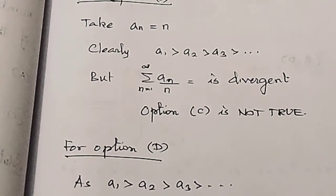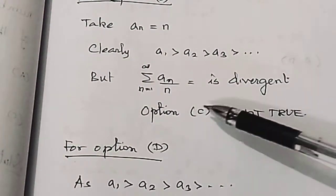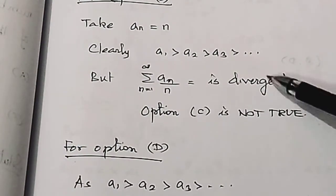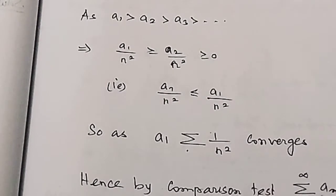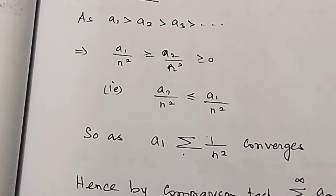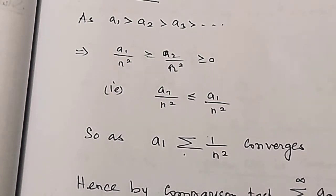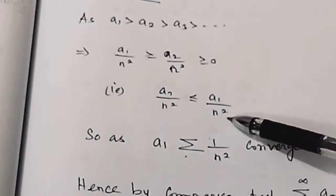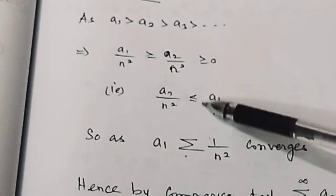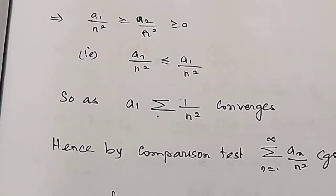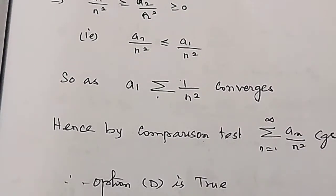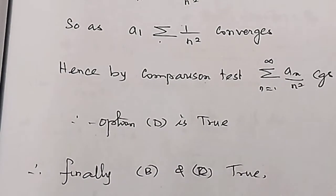The series is divergent, so option C is not true, and the convergence is also not true. Then for option D: a1 greater than a2 greater than a3 and so on, that is a_n/n² less than or equal to a1/n². So, a1 times summation of 1/n² converges by comparison test. Therefore, by the comparison test, the limit as n tends to infinity of a_n/n² converges, so D is true. Finally, both B and D are true.